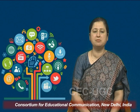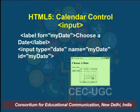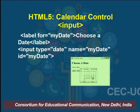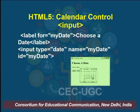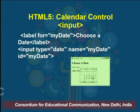Earlier, before HTML5, to ask a user for a date, we had to give 3 dropdown menus for date, month, and year. But now in HTML5, we have a calendar control — identified by writing input type equal to date. You can give it a name and an ID. When you specify input type equal to date, a proper calendar is displayed automatically on the user's screen.